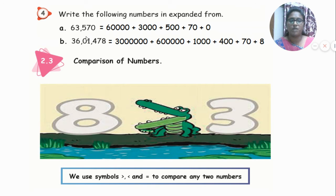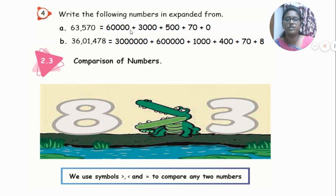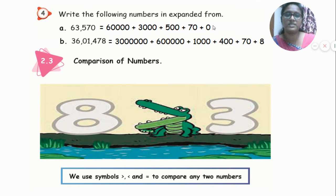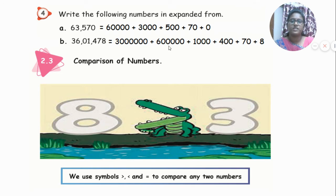Write the following numbers in expanded form. We previously joined numbers in standard notation; now we expand them. For 63,570: the digit 6 is in the ten-thousands place, so we write 60,000. Then 3 is in the thousands place: 3,000. Then 500, plus 70, plus 0. Next: 36,01,478 — thirty lakhs, plus six lakhs, plus one thousand, plus four hundred, plus seventy, plus eight.